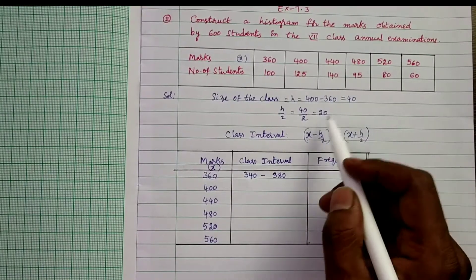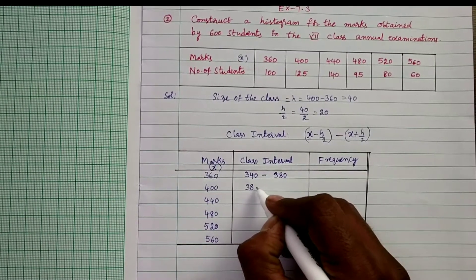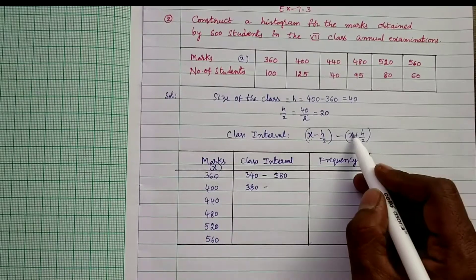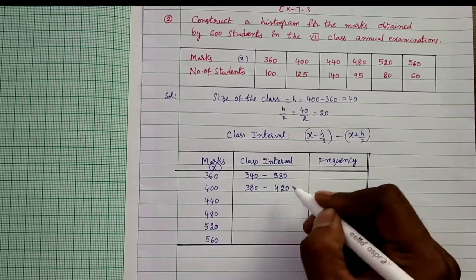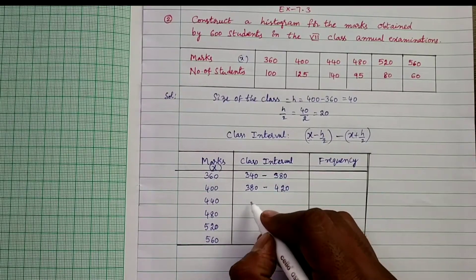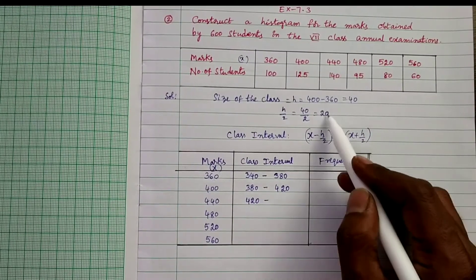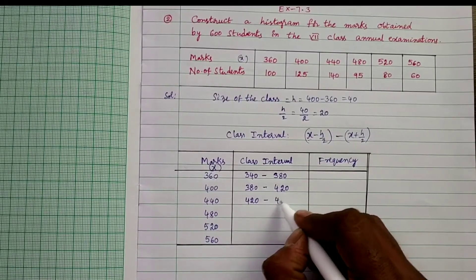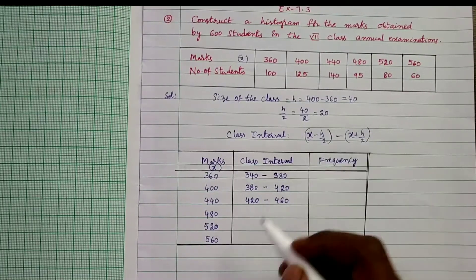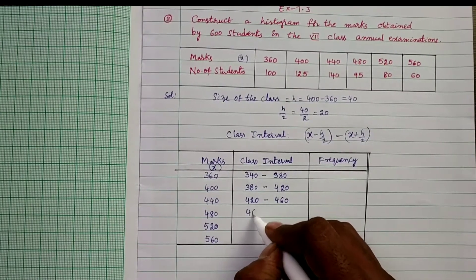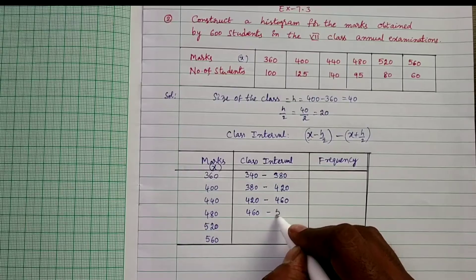Like that we construct the remaining intervals. For x = 400: 400 minus 20 = 380 to 400 plus 20 = 420. For x = 440: 440 minus 20 = 420 to 440 plus 20 = 460. For x = 480: 480 minus 20 = 460 to 480 plus 20 = 500.